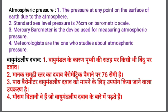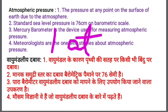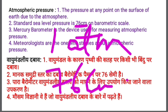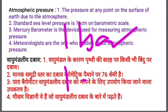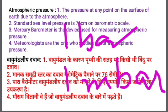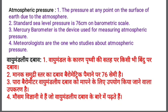Meteorologists are those who study atmospheric pressure and weather conditions of any region. The units of pressure you must remember: one atmosphere, which equals 76 cm on the barometric scale; one bar; and mostly one millibar, which is the unit used by meteorologists. Remember these units — they can appear in MCQ questions.